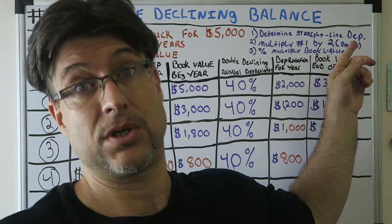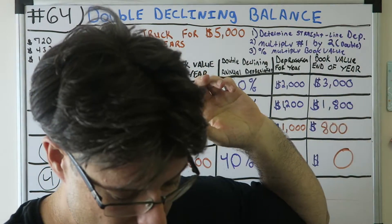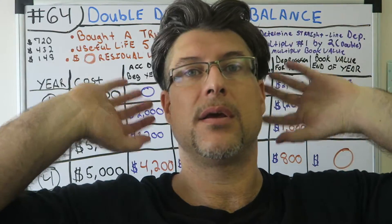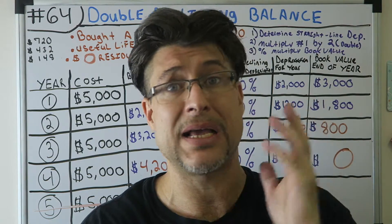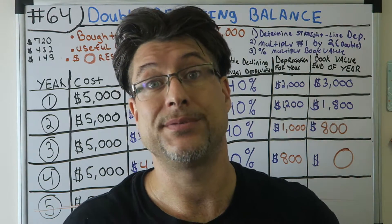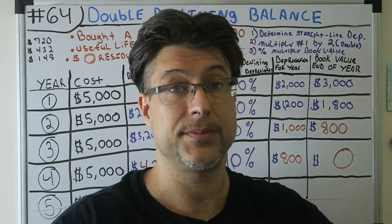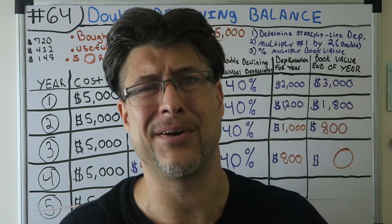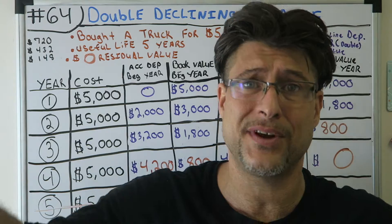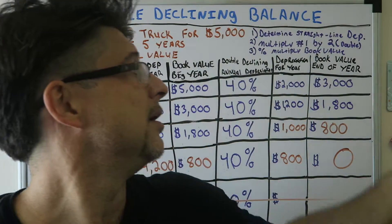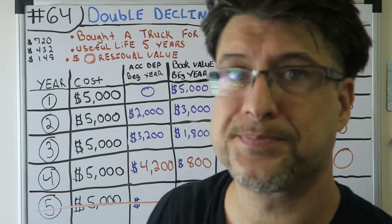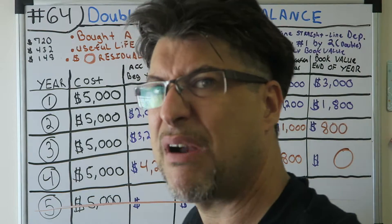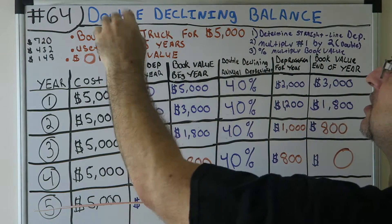I'm going to die of heatstroke — basically what's going on, I've got no AC. This is like the fourth time I've tried to do this video, and this is the last time. I'm putting it out whether I die trying or not. No editing on this one, I don't even care anymore. This is accounting for beginners number 64, right after 63. This is double declining balance without residual value.